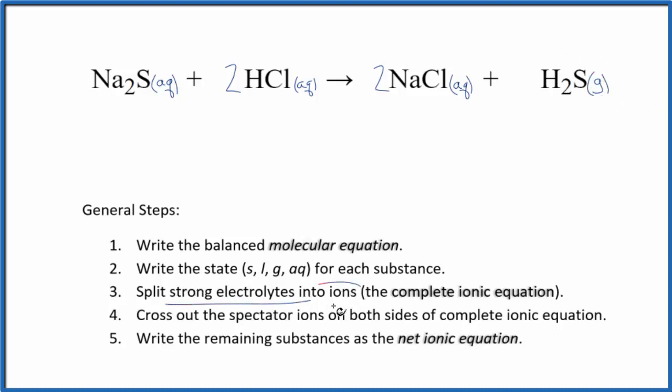Now we can split the strong electrolytes into their ions. And this will give us the complete ionic equation. Sodium group 1 has a 1 plus charge. Sulfide ion is 2 minus. So I have Na plus. And the subscript means I have two of them. And then I have just the one sulfide ion. Plus hydrogen and then chlorine. So I have two hydrogen ions. Plus the two chloride ions. And these are the reactants in our net ionic equation.